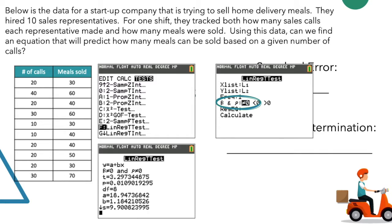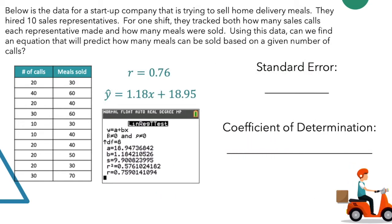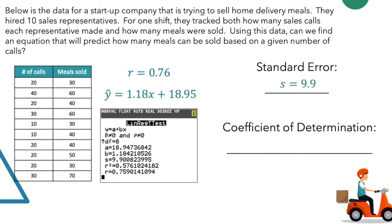Tell it that it's a two-tailed test and hit calculate. Wow, that's a lot of information. You need to scroll down, and when you scroll down it brings up even more information. But here's what we're interested in: s and r squared. So s is 9.9 — that's our standard error. And our coefficient of determination, r squared, is 0.58.